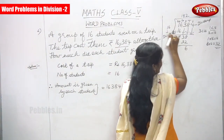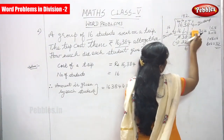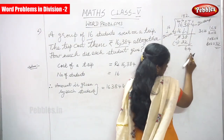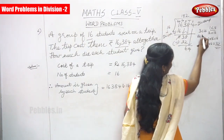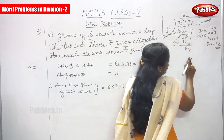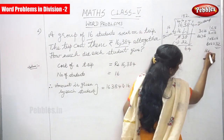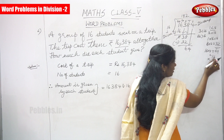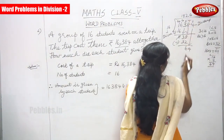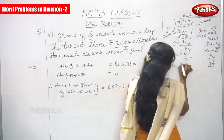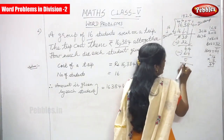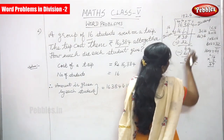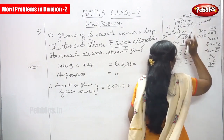Bring down the next digit, that is 4. It becomes 64. 64 is greater than 16, so you can divide. 64 divided by 16 — 16 into 4: multiply — 6 fours are 24, carry over 2; 1 four is 4, plus 2 is 6. That is 64. So put 4 in the quotient. 64 minus 64 is 0. The remainder is 0 and the quotient is 1024.